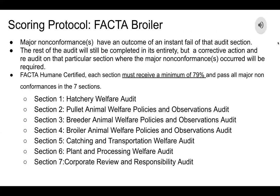For the FACTA scoring protocol — the Animal Welfare Assurance Certification and Training for broilers — major non-conformances result in an instant fail of that audit section. The rest of the audit will still be completed in its entirety, but a corrective action and re-audit on the particular section where the major non-conformance occurred will be required.